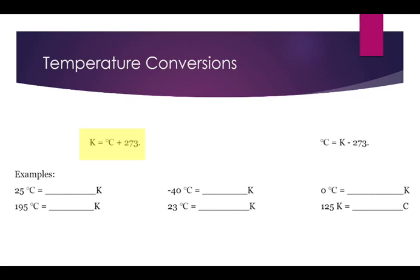So, here in these examples, if I have 25 degrees Celsius, I add 273 to that. And that gets us 298. We go down, 195 C is going to be 468 Kelvin.